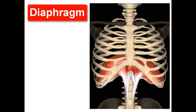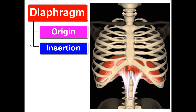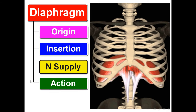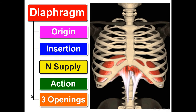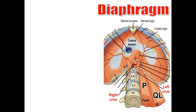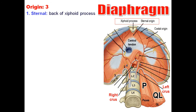Now let's talk about the diaphragm, also called the abdominal diaphragm or diaphragm of the thoracic outlet. It closes the thoracic outlet. The origin of the diaphragm: it has a sternal origin from the back of the xiphoid process, a costal origin from the lower six costal cartilages, and a vertebral origin. So there are three origins: sternal, costal, and vertebral. The vertebral origin is by two crura and three arcuate ligaments.